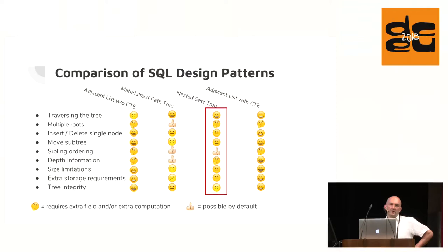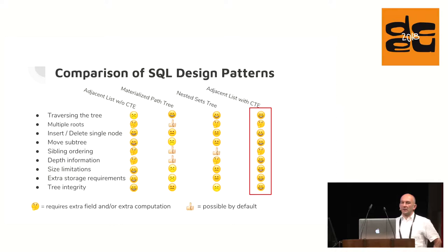Nested sets pattern is another interesting approach and commonly used. Tree traversals are very fast. However, when adding or deleting a node, we must update big parts of the tree. If you get one of the left or right numbers wrong, your complete tree is screwed up. By using common table expressions in adjacent lists, the problem of slow tree traversal is solved. Therefore, in my opinion, this is the best choice and should be used whenever possible. Computing the depth of a node can be integrated into the recursive SQL statement while fetching the tree.